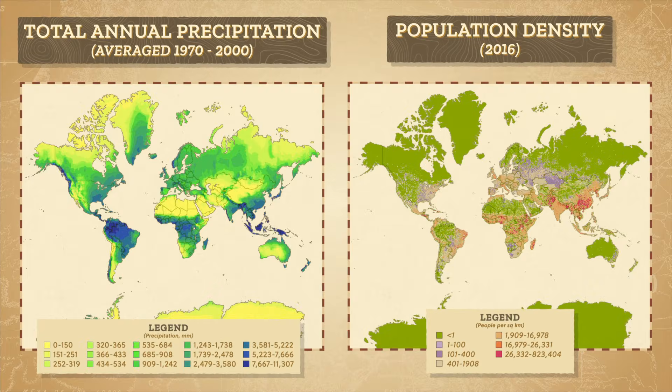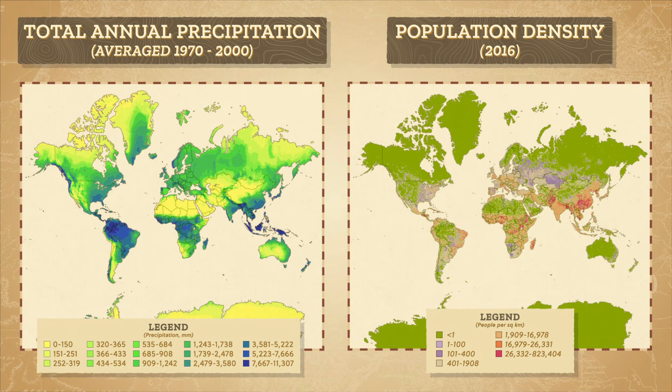So using a map of precipitation helps us track water on Earth and reveals potential consequences of differing access to water. Like if we compare our precipitation map with a map of population distribution, we can understand a simple but powerful pattern of human geography: where there is water, there are people.